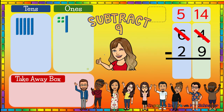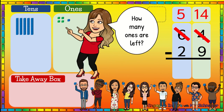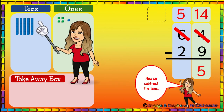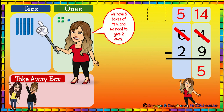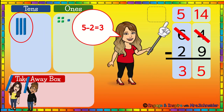Now we have enough for our nine friends. We're going to subtract nine — one through nine. How many ones are left? Five. Fourteen minus nine equals five. Now we subtract the tens. We have five boxes of ten and we need to give two away. How many tens are left? Three. Five minus two equals three. So our answer to our problem was thirty-five.